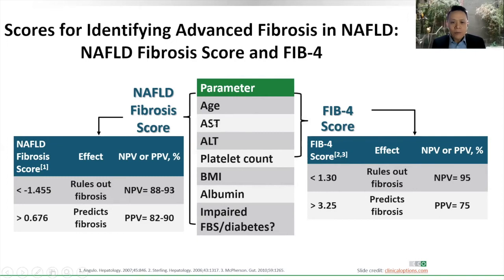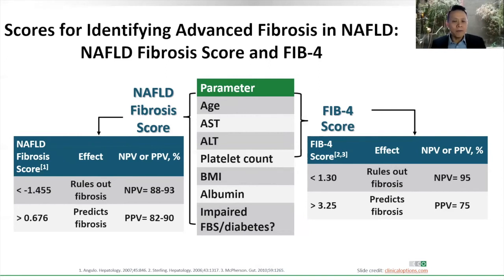The FIB-4 score requires age, ALT, AST, and platelet count. The NAFLD Fibrosis Score adds BMI, albumin, and blood sugar levels. Most of these can be obtained from a regular general check-up. You can download a smartphone app like MedCalc to compute these scores by simply entering the numbers. Right there in your clinic, you can already predict whether there is significant fibrosis or minimal fibrosis.